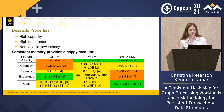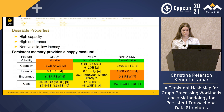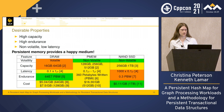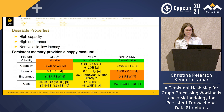Looking at the table again: for high capacity, NAND SSD is a clear winner, but persistent memory has much better endurance than NAND SSD. We need non-volatility — either persistent memory or NAND SSD satisfies that — but persistent memory has latency only about 10 times slower than DRAM. In this case, persistent memory is the happy medium.